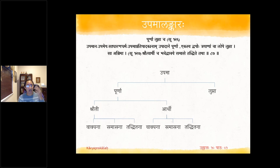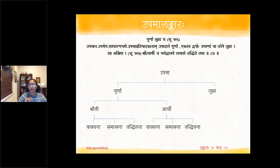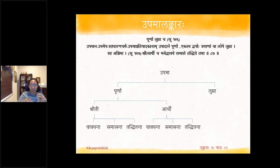Poorna Upama is first divided into Shrauthi and Arthi — Shrauthi Purnopama and Arthi Purnopama. Each of these is further divided into Vaakyaga, Samasaga, and Taddhitaga — whether the Upama is expressed in a sentence, in a compound (Samasa), or through a Taddhita suffix. So Purnopama has six varieties: Vaakyaga Shrauthi, Samasaga Shrauthi, Taddhitaga Shrauthi, Vaakyaga Arthi, Samasaga Arthi, and Taddhitaga Arthi.